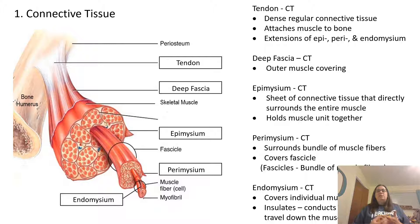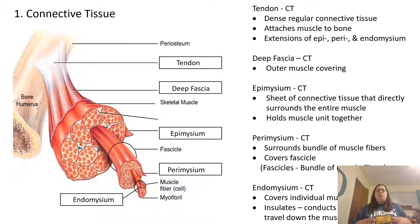Each muscle fiber is wrapped in a layer of endomysium. Then a group of individually wrapped muscle fibers is wrapped again with the perimysium. Then a group of those fascicles wrapped in perimysium is wrapped with the epimysium. And then it's wrapped again with the deep fascia. So there are multiple layers wrapped around these muscle cells.